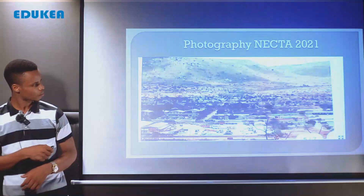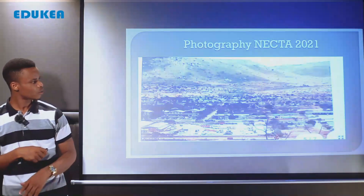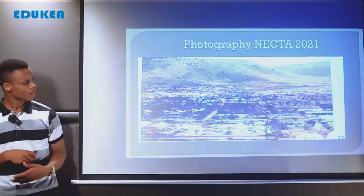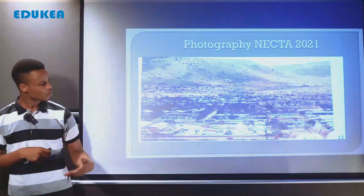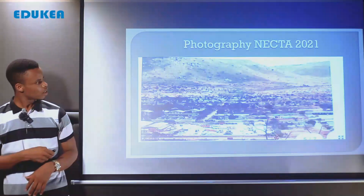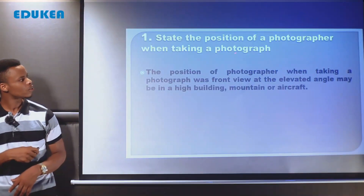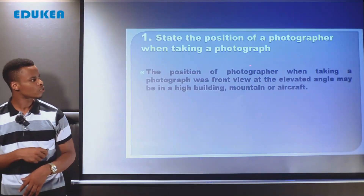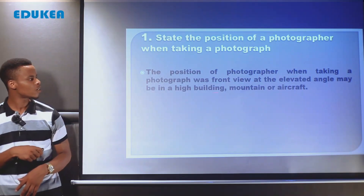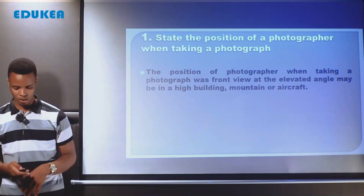We see both the top and side view of the picture, meaning the picture is taken from a lower oblique or elevated front position. So the photographer must have been in front at an elevated angle. To conclude: the position of the photographer when taking the photograph was a front view at an elevated angle, maybe in a high building, mountain, or aircraft. That is the answer to the first question.